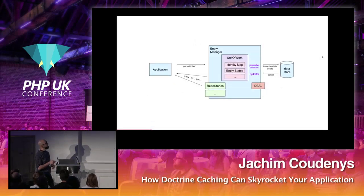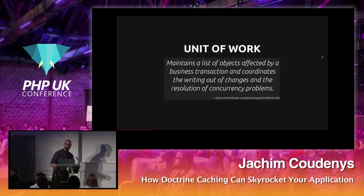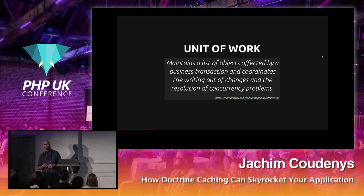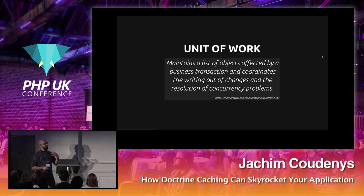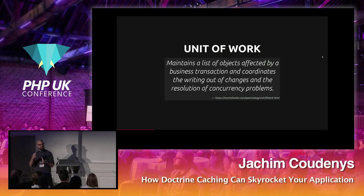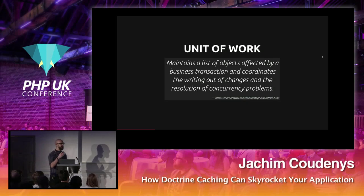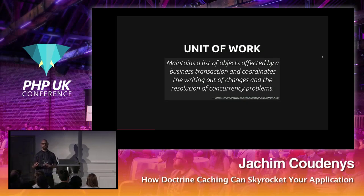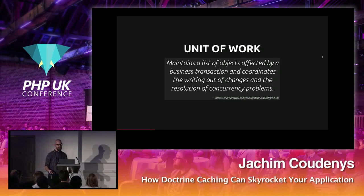The big chunk in the middle is the entity manager — the central point where our application communicates with Doctrine to request entities and give them back to Doctrine to manage and calculate differences. Inside the entity manager we have a Unit of Work, which maintains a list of objects affected by a business transaction and coordinates writing out changes and resolving concurrency problems.